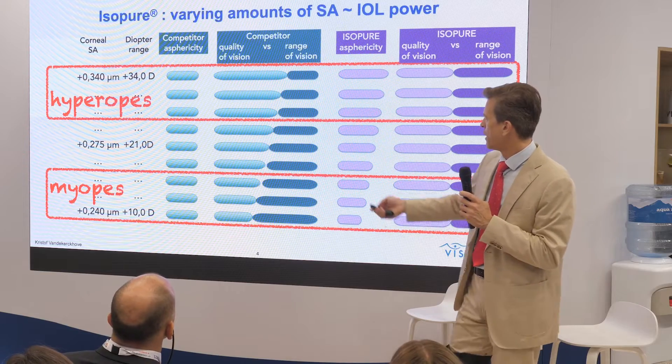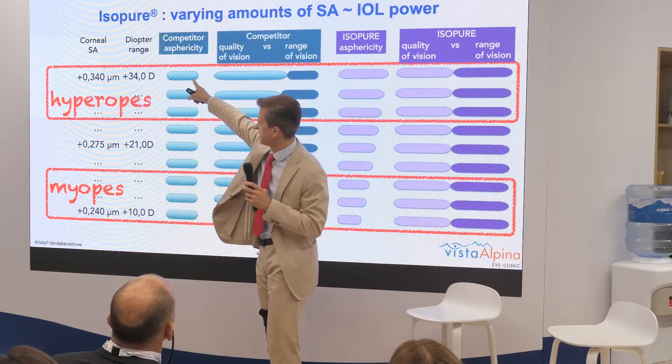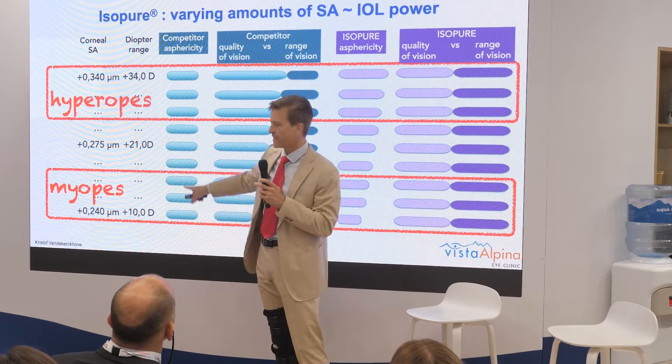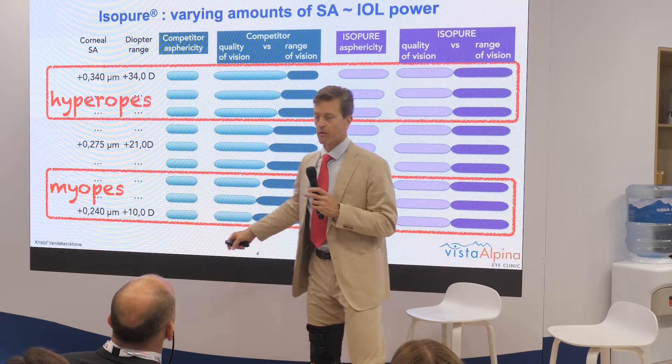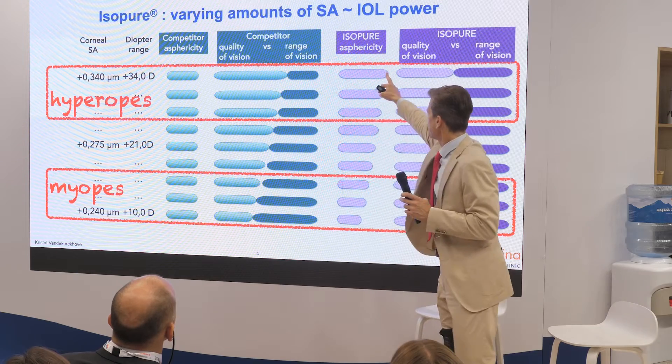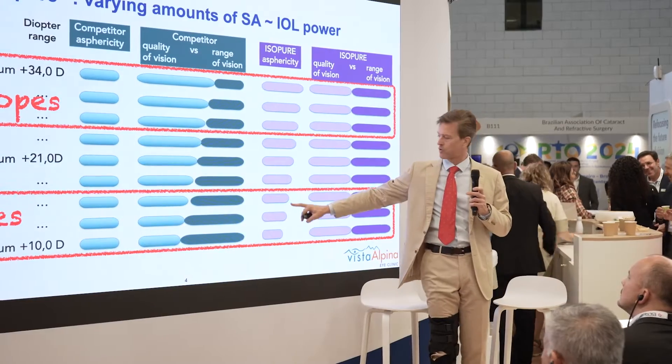This means the defocus is pupil-size independent. What I also like about this lens is that the defocus power — the asphericity — is customized according to the IOL power. For a competitor lens, the asphericity remains the same across the entire diopter range, whereas for isopure the asphericity changes.